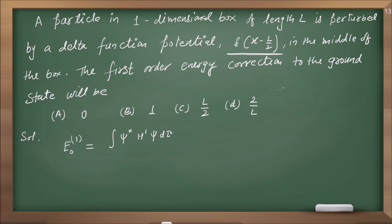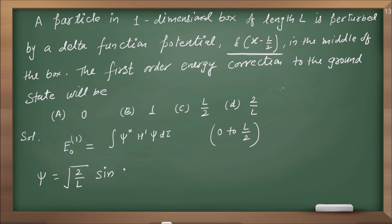Perturbation middle of the box पर है, तो integration की limits होंगी 0 to L/2. यह one-dimensional box है और box की length L है, तो ψ होता है: ψ = √(2/L) · sin(nπx/L). n mention नहीं है तो we take n = 1, so ψ = √(2/L) · sin(πx/L).